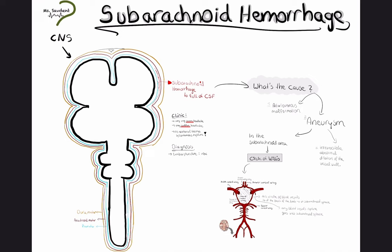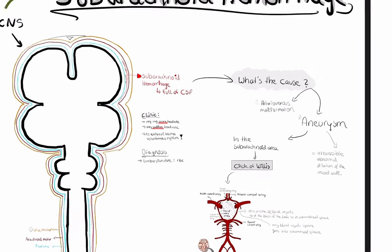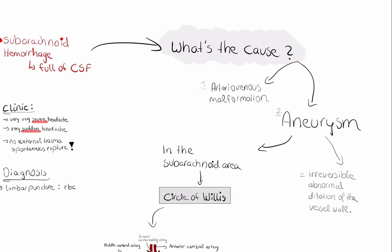But what's the cause? How do we get subarachnoid hemorrhage? We have two causes: aneurysm and arteriovenous malformation. What I'm going to explain is aneurysm, and I'm just going to mention superficially that we also have arteriovenous malformation.